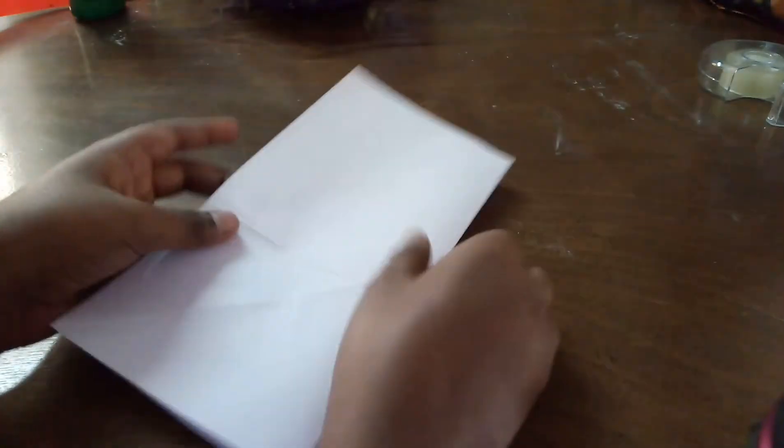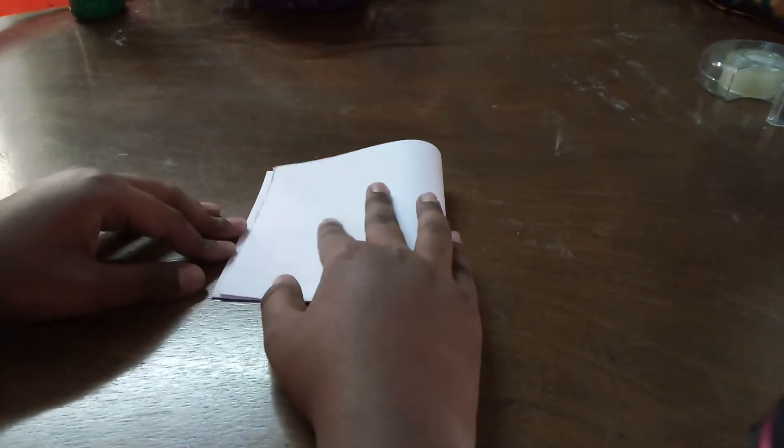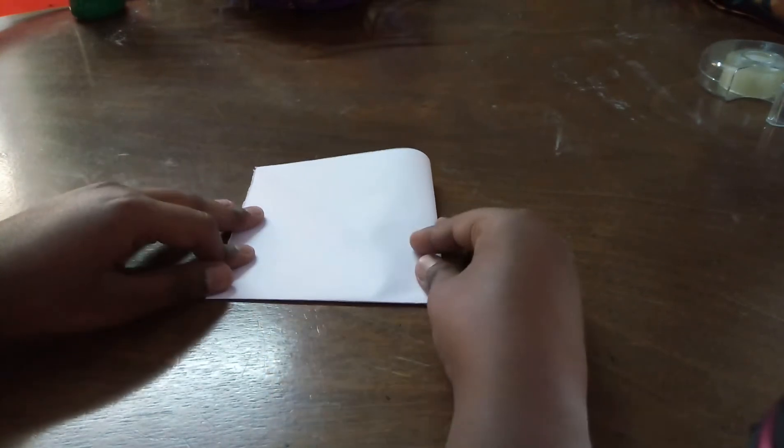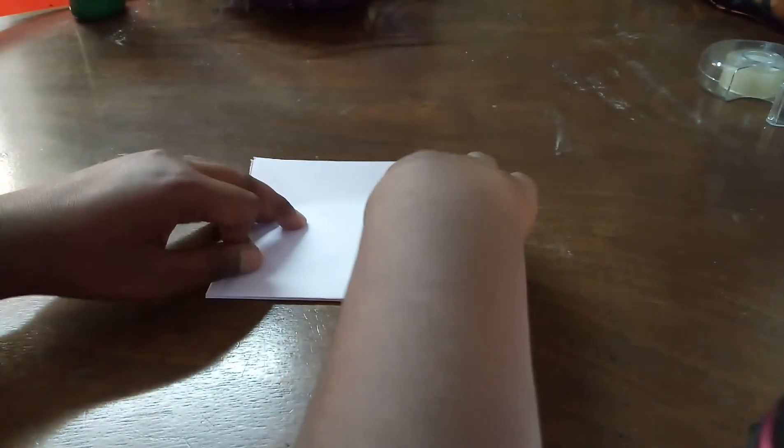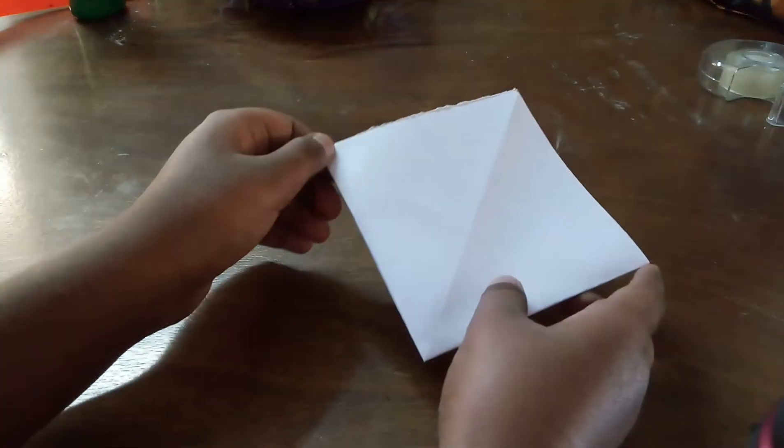Now you are going to get a book sort of thing. Now you want to turn it to half again. Just like so. Make sure that it's perfect, of course. There we go. Now we are going to get a smaller square.